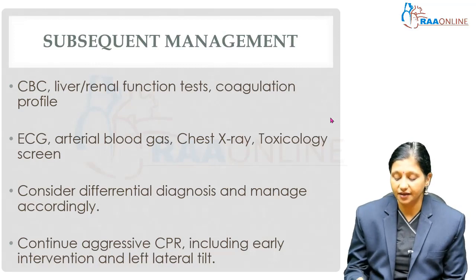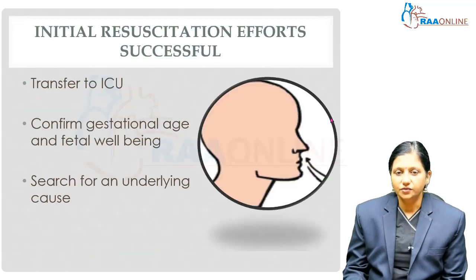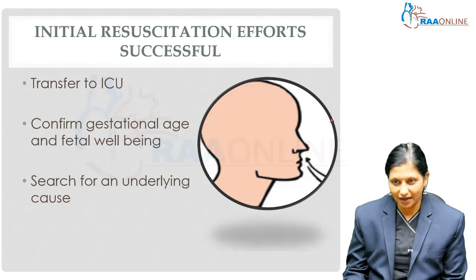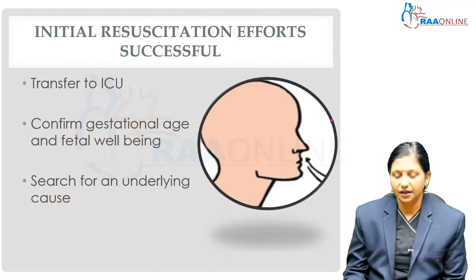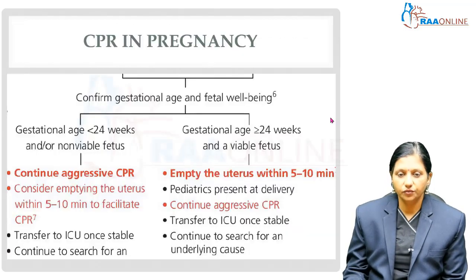Give the patient left lateral tilt to minimize compression of the gravid uterus on the aorta. Transfer the patient to ICU. Confirm the patient's gestational age and fetal well-being, and search for an underlying cause of cardiovascular collapse in pregnancy.